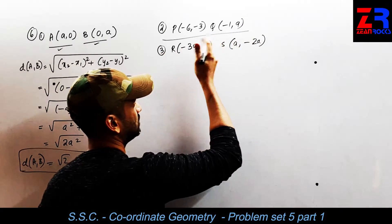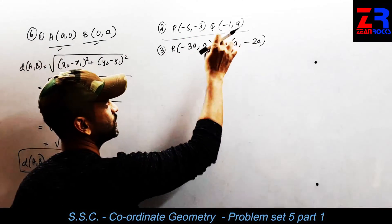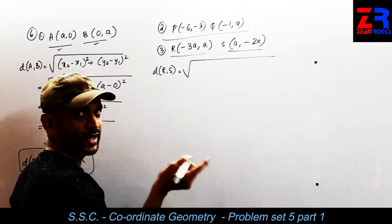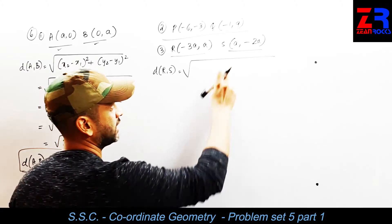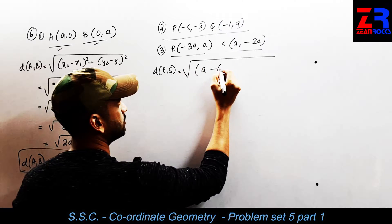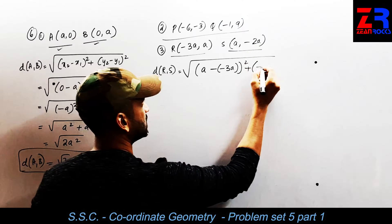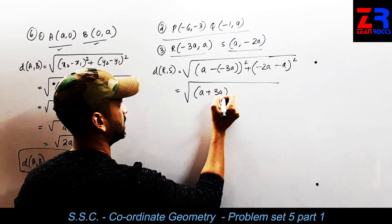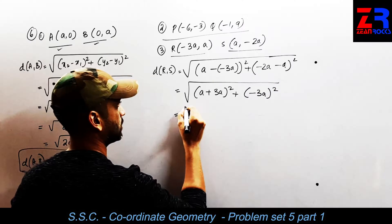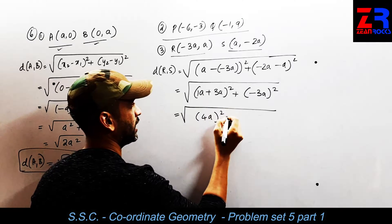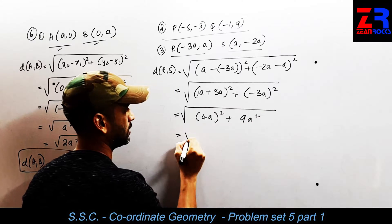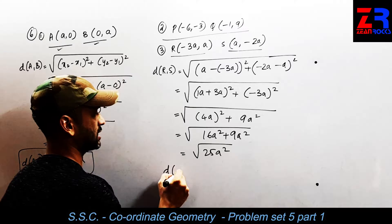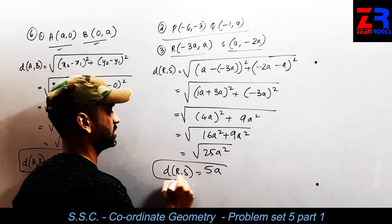Distance PQ involves normal numbers which you can all solve at home. For distance RS with variables: using the distance formula, x2 minus x1 gives (a minus (minus 3a)) equals 4a, and y2 minus y1 gives (minus 2a minus a) equals minus 3a. So distance RS equals square root of (4a)² plus (minus 3a)² equals square root of 16a² plus 9a² equals square root of 25a², which equals 5a.